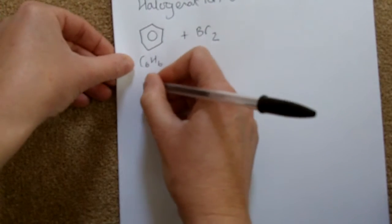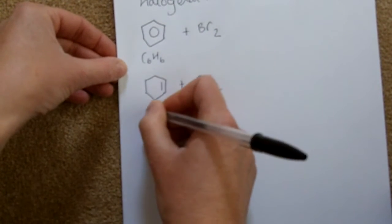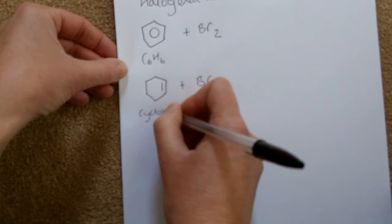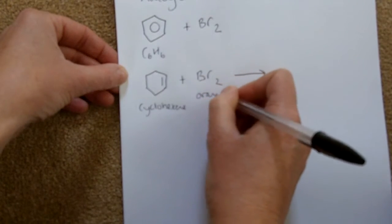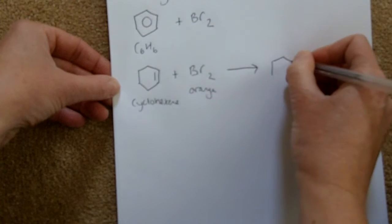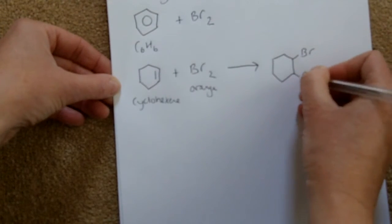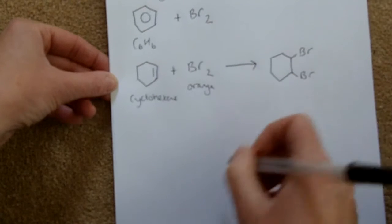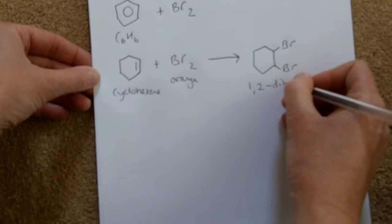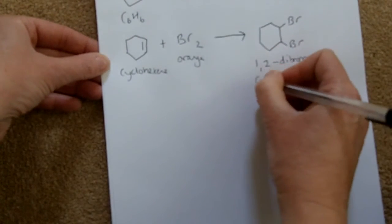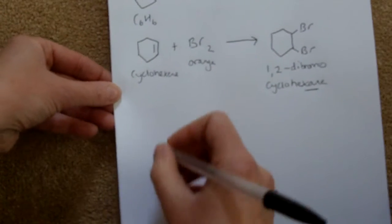First, let's do a bit of revision. If we take cyclohexene, which is an alkene, and react that with bromine — remember, bromine water is an orange colour — the carbon-carbon double bond would break and you'd get one product. In this case, that product is 1,2-dibromocyclohexane. It's not an alkene anymore.